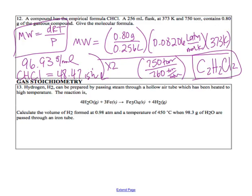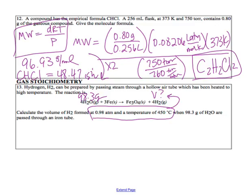This last problem is a merging of stoichiometry with gas laws. Calculate the volume of H₂ formed at 0.98 atm when 98.3 grams of H₂O are passed through an iron tube. We're forcing the creation of a gas and we want to know how many liters form. Who wants to talk me through the first step?